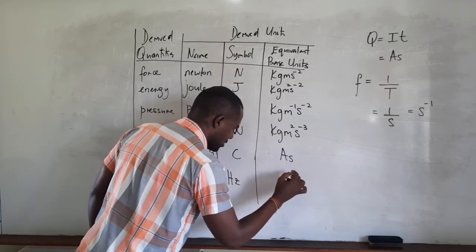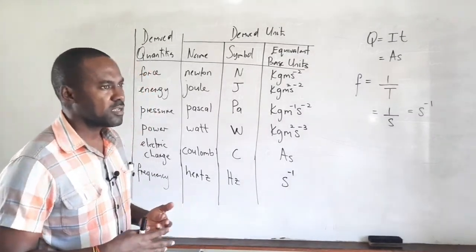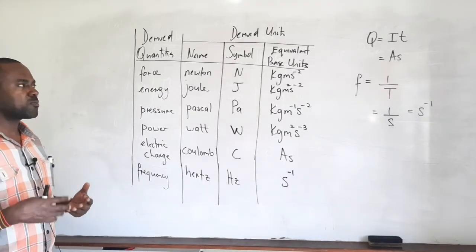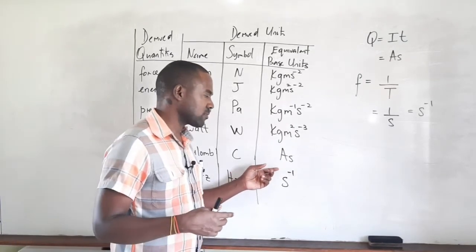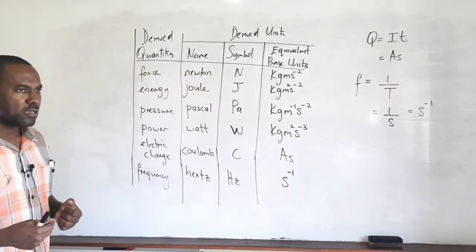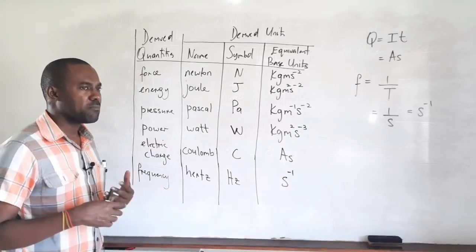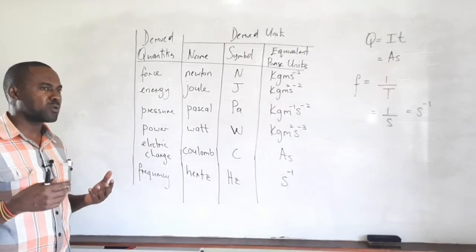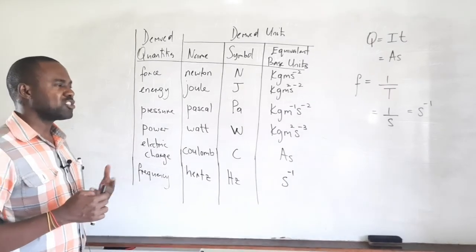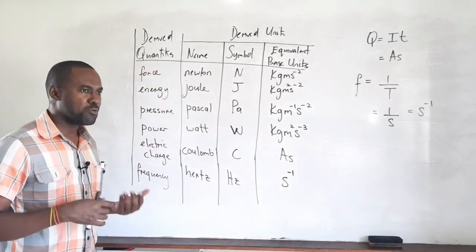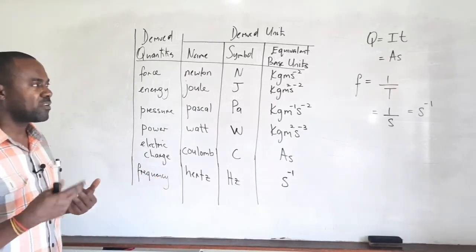This covers a list of derived quantities with special names, each expressed in terms of their equivalent base units. We will need to use these in the next topic: dimensional analysis, also referred to as homogeneity of physical equations. To check if an equation is homogeneous, we must be able to express each term in the equation in terms of its equivalent base units.